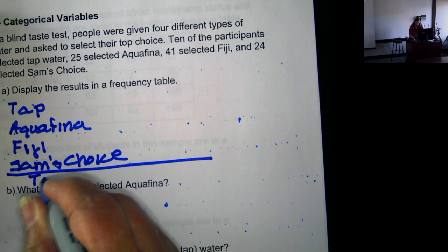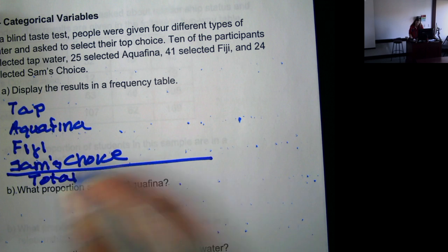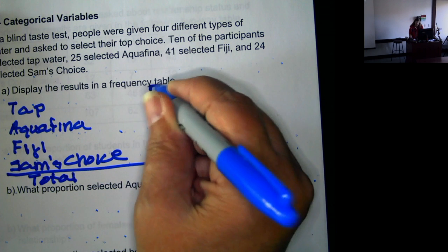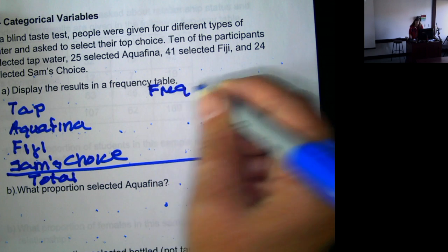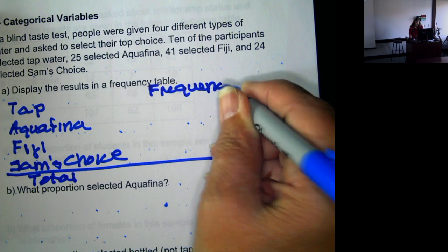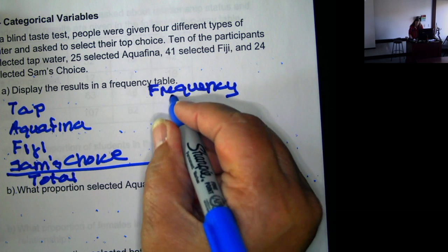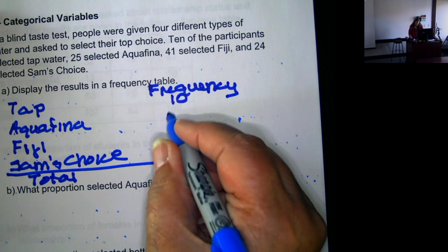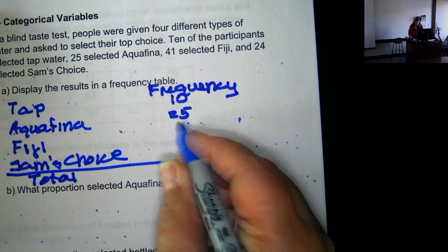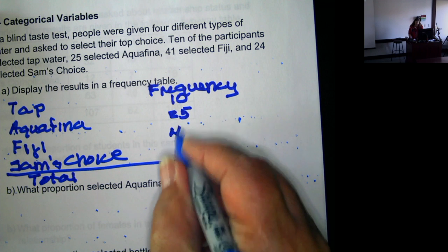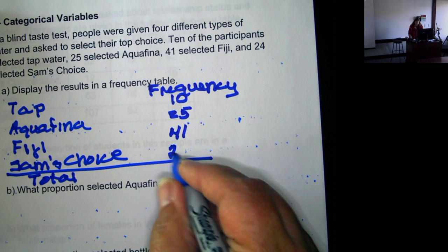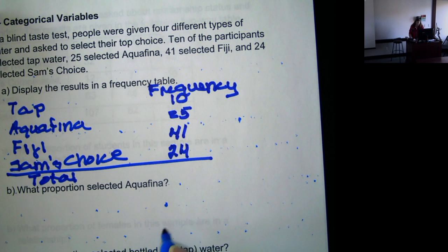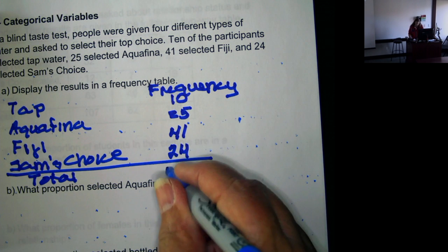Then we're going to come up with a total. So the frequency, ten chose tap, 25 Aquafina, 41 Fiji, and 24 Sam's choice.